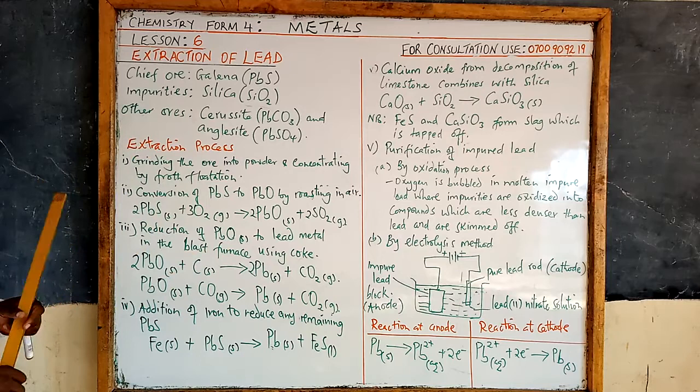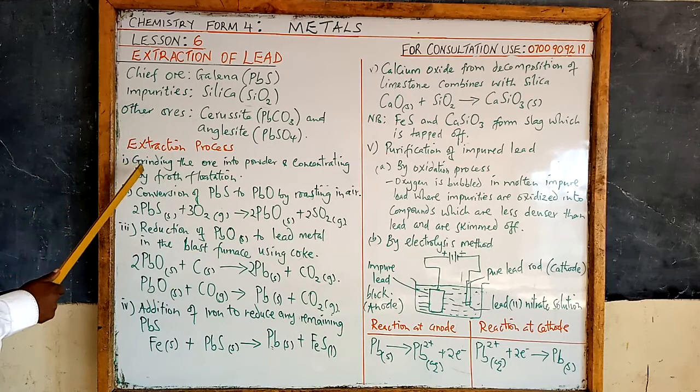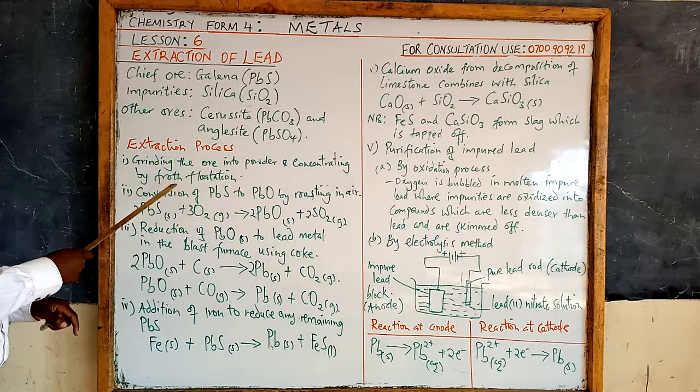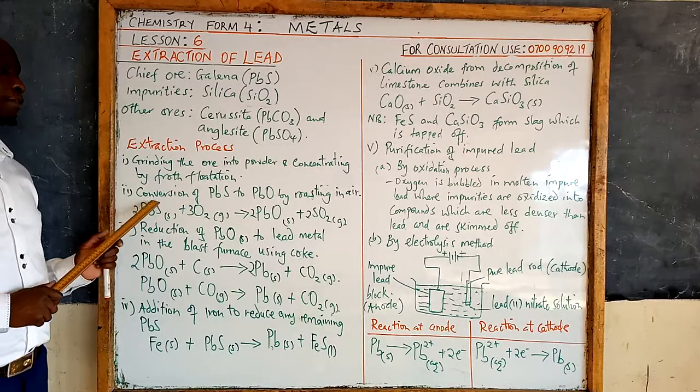The extraction process involves a number of steps — six main steps. Step one: the ore is ground. After mining, the ore is ground and the earthy materials are removed. The ore is then ground into powder and concentrated by froth flotation.